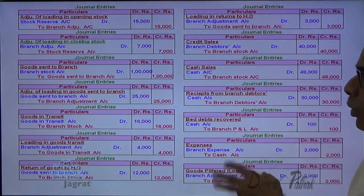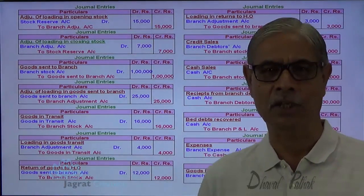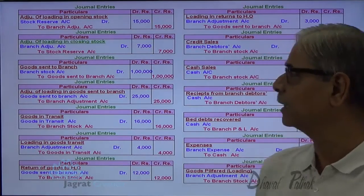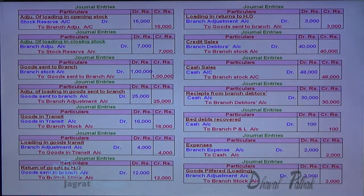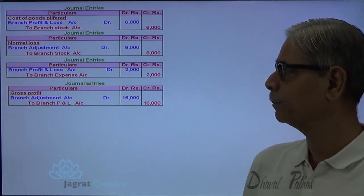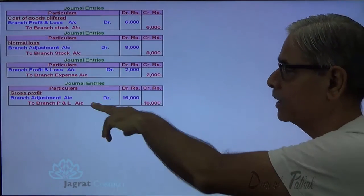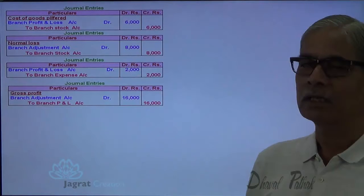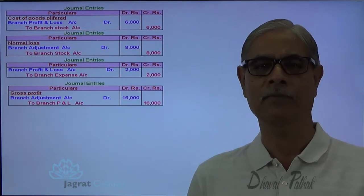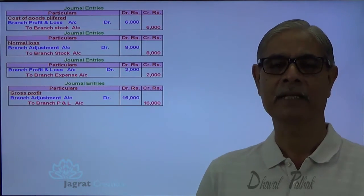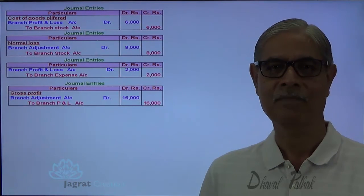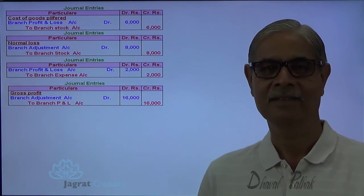All the journal entries recorded while solving the sum are now presented for better understanding. The final entries include: branch adjustment account debit 16,000, profit and loss account credit 16,000 for transfer of gross profit; and branch profit and loss account debit, general profit and loss account credit for net profit of 8,100. This is how the sum gets solved. Thanks so much.